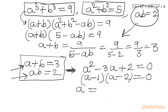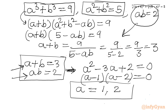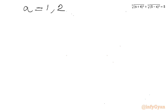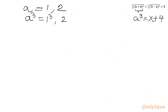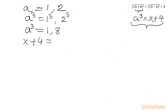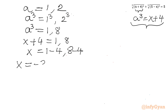Now a was our substitution where a cube equals x plus 4. For a equal to 1: a cube equals 1, so x plus 4 equals 1, giving x equals minus 3. For a equal to 2: a cube equals 8, so x plus 4 equals 8, giving x equals 4. So our final solutions are x equals minus 3 and x equals 4.